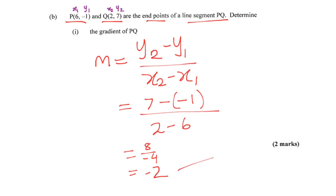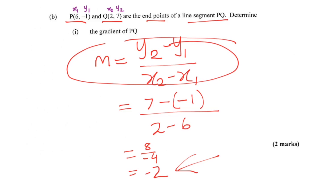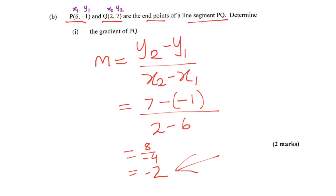That gives a nice negative 2, so that is your gradient for part A. Learning this formula will generally get you 2 marks even if you don't understand the whole of coordinate geometry — at least learn your gradient formula.